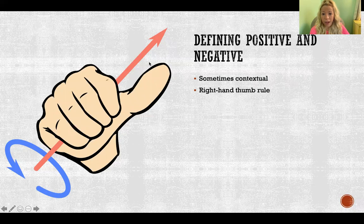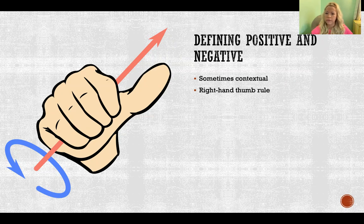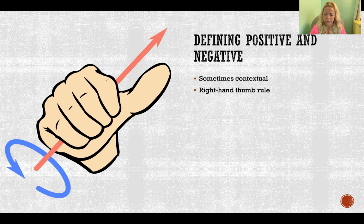How do we know if we're going in the positive direction? Sometimes it's contextual. For example, if we're analyzing somebody running sprints, which direction is positive and negative depends on how you define your situation. Maybe if they're starting at a certain point and running forward on the track, that's the positive direction, and if they turn around and come back, that's the negative direction. But you could do it the other way, and sometimes it just depends on what makes the most sense for that context.